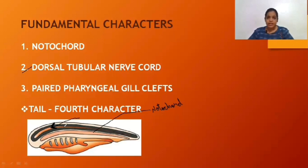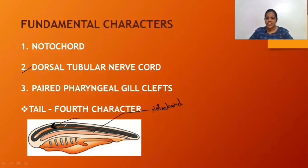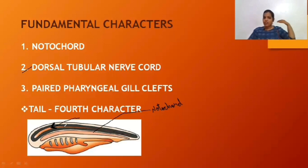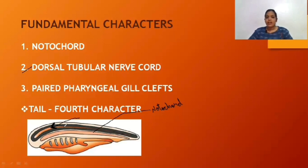Dorsal means our back, ventral means our front, and lateral refers to our sides. These tubular nerve cords are ectodermal in origin, meaning they are derived from the ectodermal germ layer. The third fundamental character is Paired Pharyngeal Gill Slits. These gill slits are pores in the pharynx of the chordate members, present in paired form on the lateral surface. The pharyngeal word itself tells you that they are present on the pharynx.